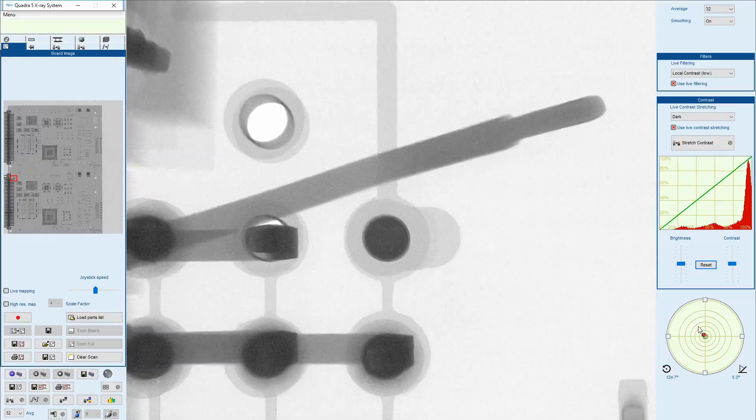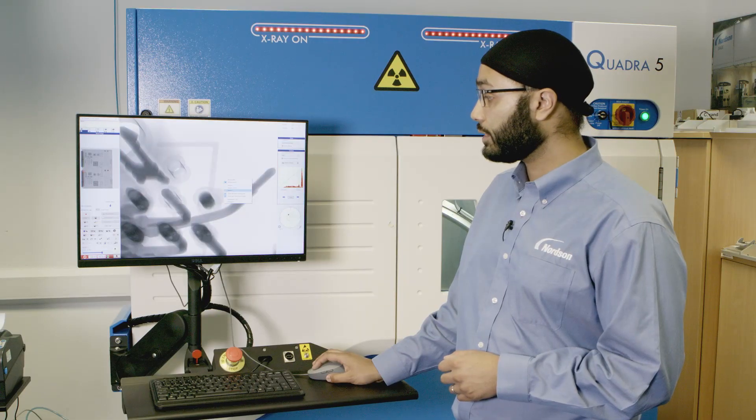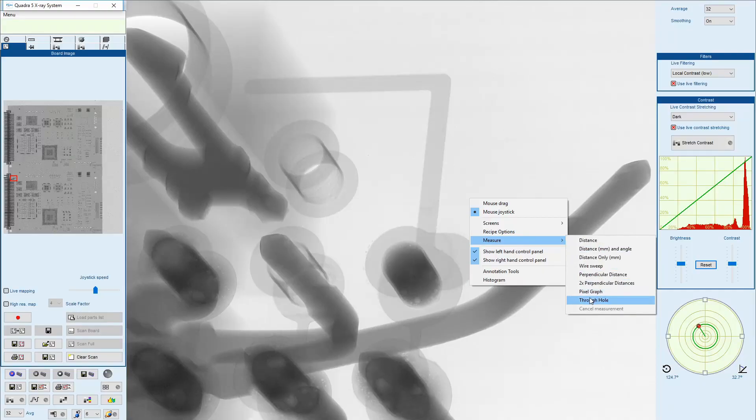Zoom in. Move the detector to an angle. Right click on the screen. Go to measure. And then through hole.